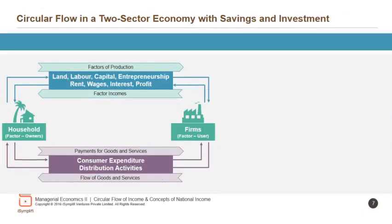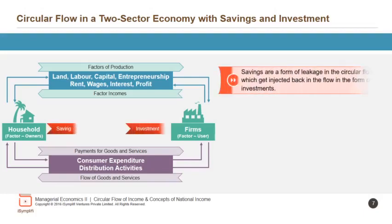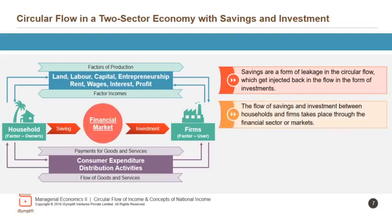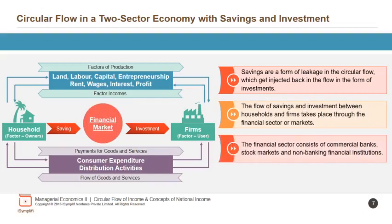In the circular flow in a two-sector economy with saving and investment, savings are a form of leakage in the circular flow, which get injected back in the flow in the form of investments. The flow of savings and investment between households and firms takes place through the financial sector or markets, which consists of commercial banks, stock markets and non-banking financial institutions.